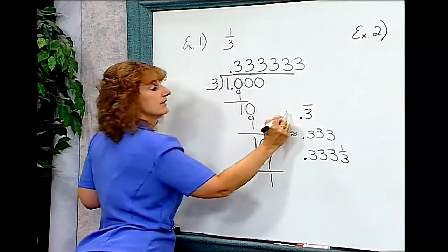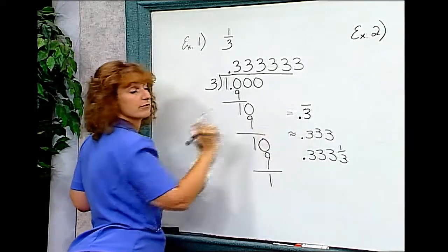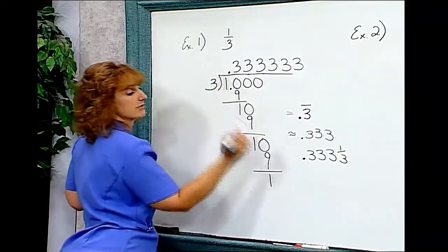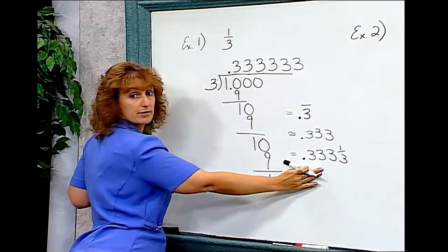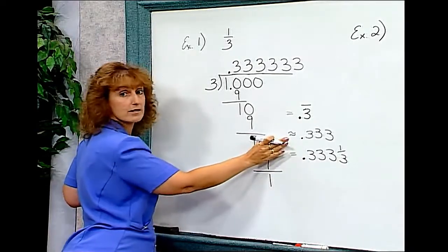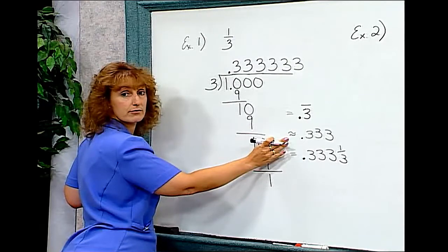One-third is equal to .3 repeating. It's also equal to .333 and one-third. It's approximately .333.